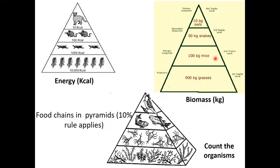Having 100 kilograms of mice means that this particular ecosystem could support that mass of mice — whether one very large mouse or ten very small mice. Then at the bottom, we actually physically count the organisms. For example, at the bottom we have six plants, then seven arthropods, two fish, and one big bird. Up here it's the mass we would weigh, and over here we talk about the energy needed for each organism to exist.